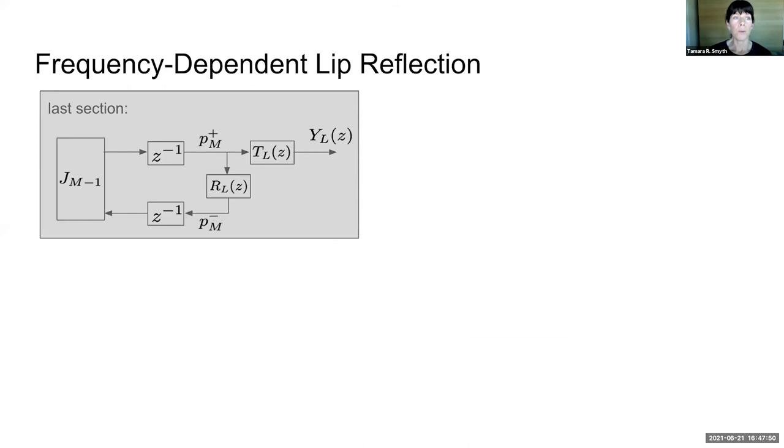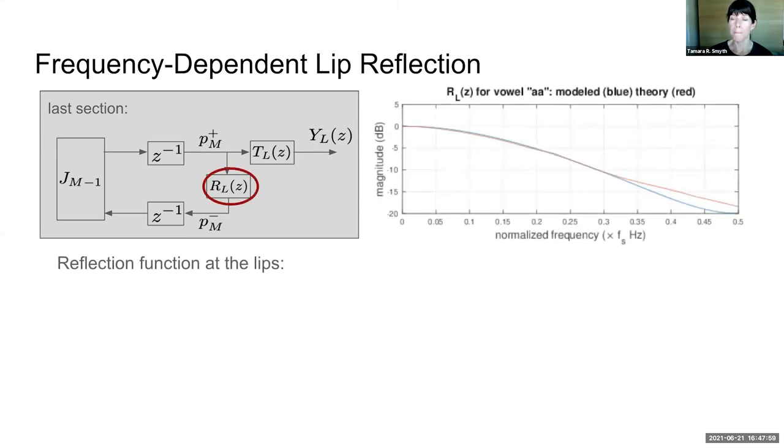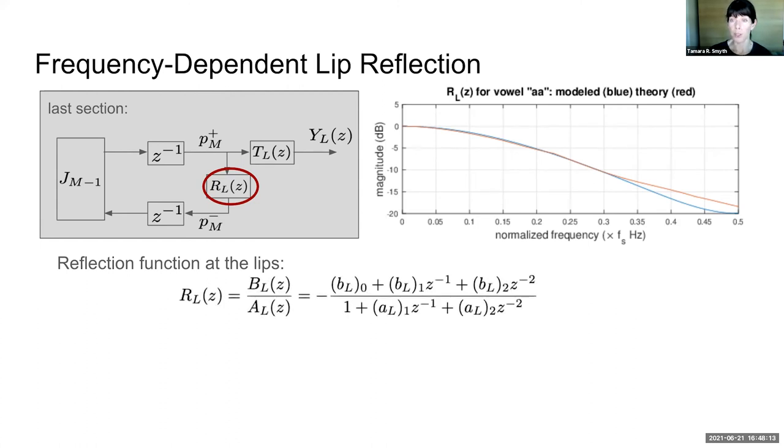Finally, we want to incorporate frequency-dependent losses at the lip reflection. To do this, we borrow from previous work modeling acoustic tubes and musical instruments. We found there that a cascade of first-order shelf filters producing a second-order section produces a very good match to the theoretical reflection of a cylindrical open end.